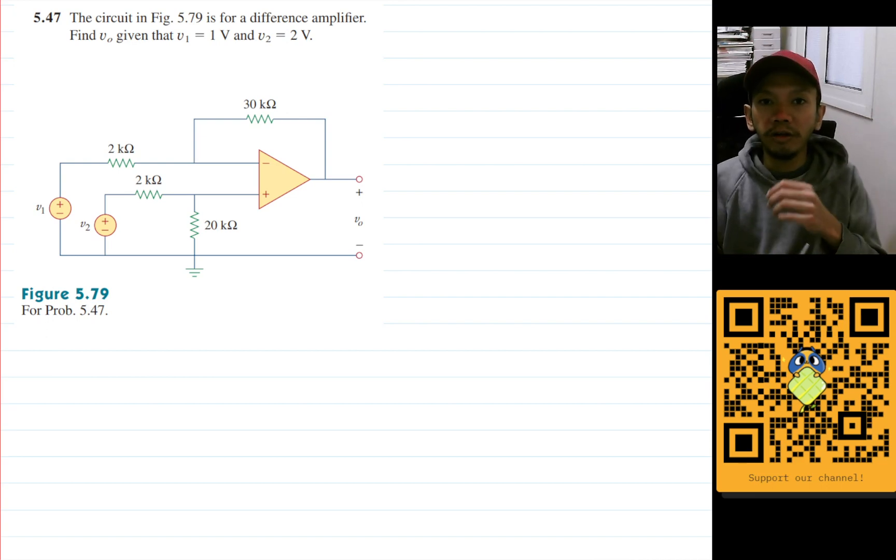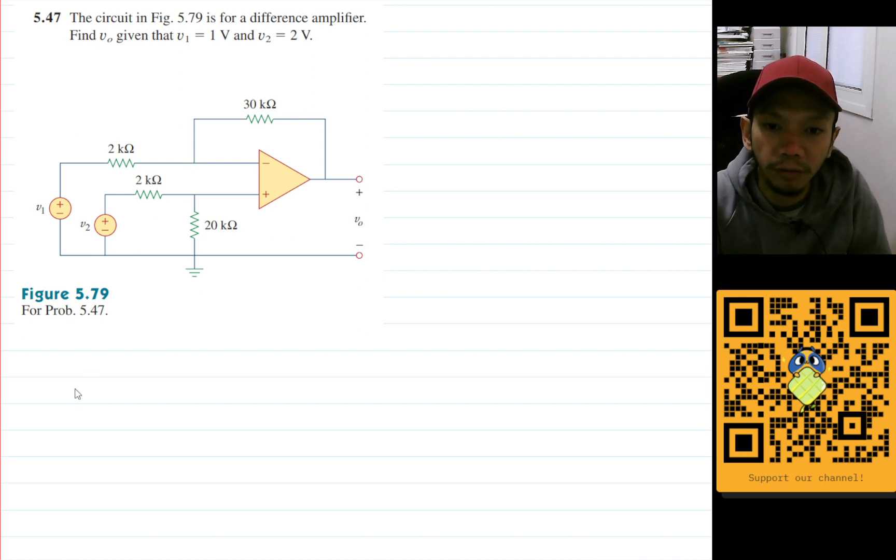Hello, my name is Ardi and we are going to solve problem 5.47 from Sadiku's book. The question is: the circuit in Figure 5.79 is for a difference amplifier. Find V0 given that V1 is 1 volt. Let's write that, so this is 1 volt, and then V2 is 2 volt. And we are asked to find